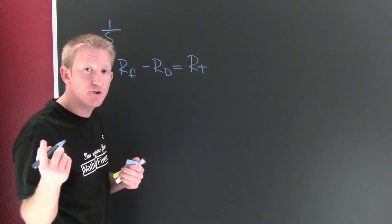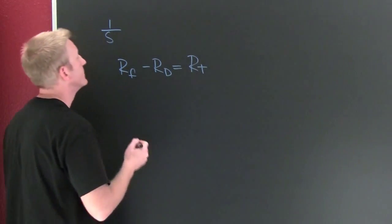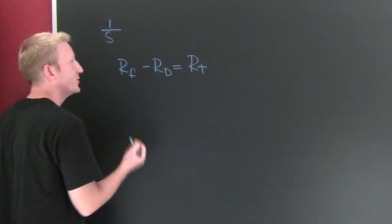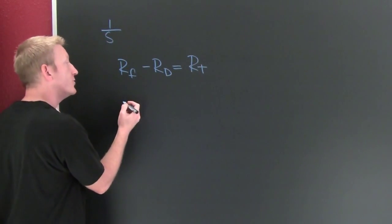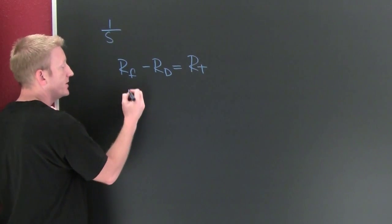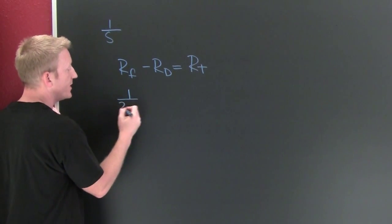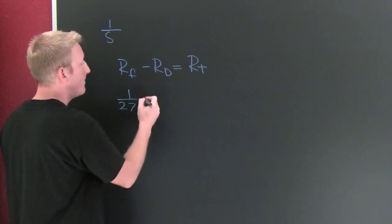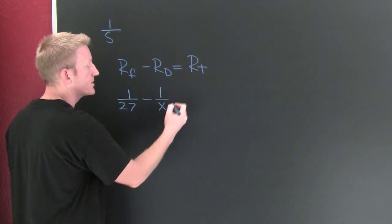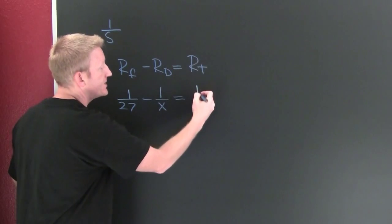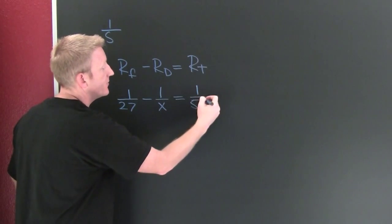Because the drain is working against the sink or the faucet. Okay. So then I know the rate of my fill. That's one sink in 27 seconds, minus - do I know how fast it's draining? I don't. Let's call it X. But I know together it takes 54 seconds.